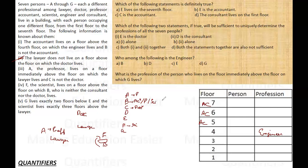B is neither a consultant nor a doctor. So I have eliminated five professions for B — accountant, professor, scientist, consultant, and doctor. The only two possibilities left for B are lawyer and engineer.